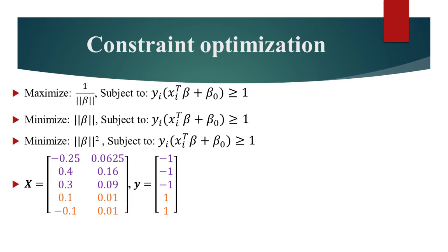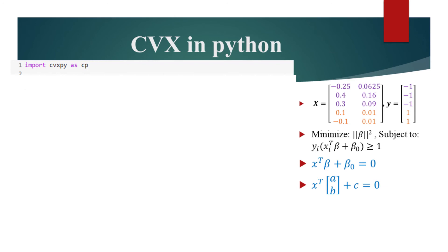In X, we have the data points from the previous graph. And in Y, we have the corresponding labels. Now we have everything needed to solve this constraint optimization problem using linear programming solvers such as CVX. In this video, we will use the CVX implementation in Python.